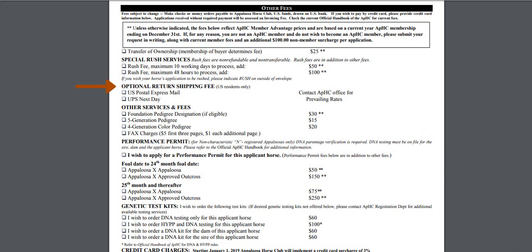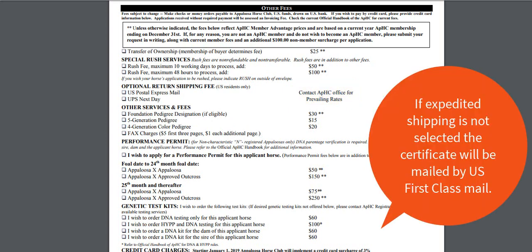You will also notice some optional return shipping methods. If you wish to accelerate mailing time, consider adding UPS next day or US Postal Express. Please contact our office for the prevailing rates. If you do not select an optional return shipping method, the certificate of registration will be mailed by US First Class Mail.